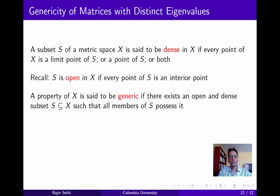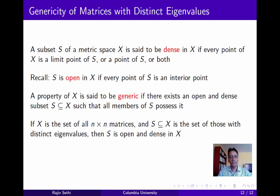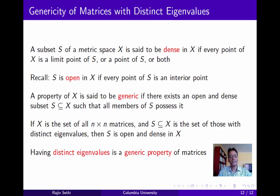We'll say that a property of X is generic if there exists an open and dense subset S such that all members of this subset possess the property. This is a very demanding requirement. However, it can be shown that if X is the set of all n by n matrices and S is a subset consisting only of those with distinct eigenvalues, then S is open and dense in X. In other words, having distinct eigenvalues is a generic property of matrices, which justifies our focus on matrices with distinct eigenvalues. In this segment the focus has been on linear maps, but we'll see that our results for linear maps are also useful in the analysis of nonlinear maps.